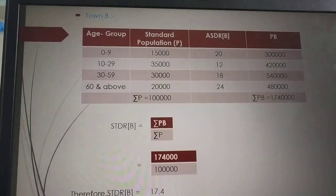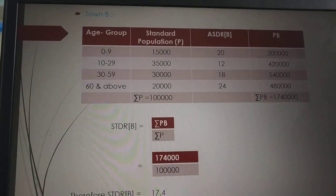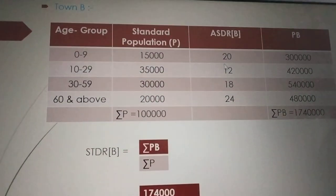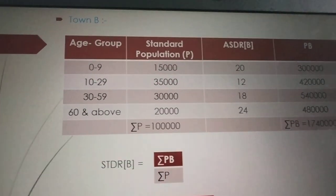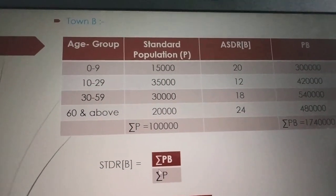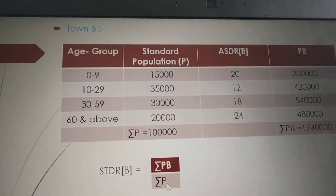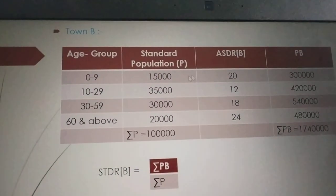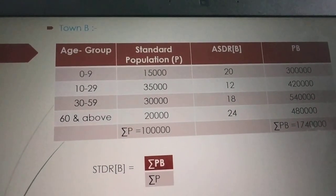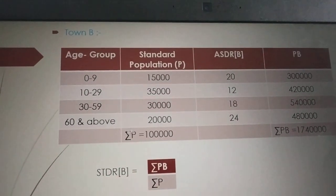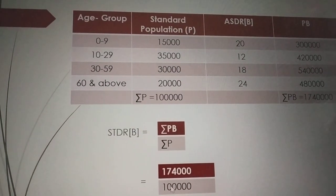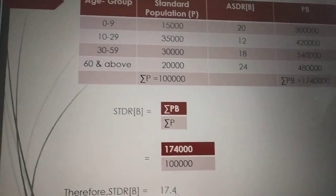Similarly calculate for town B. Copy the town B data: age group, standard population, and ASDR of B values copied directly from the deaths per thousand column: 20, 12, 18, 24. The formula is STDR of B equals summation PB divided by summation P. Multiply the columns to get PB values, add them all up to get summation PB as 1,74,000, and summation P as 1,00,000. Therefore STDR of B equals 1,74,000 divided by 1,00,000, which gives 17.4.